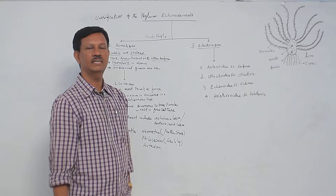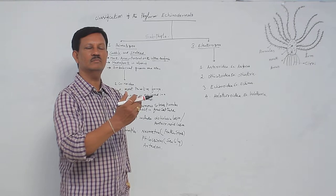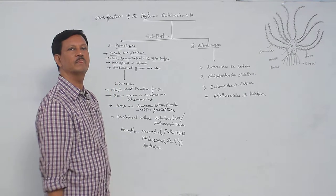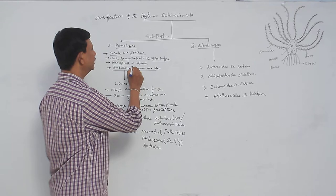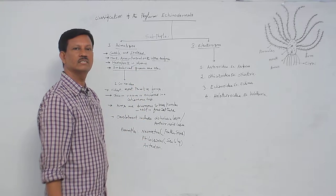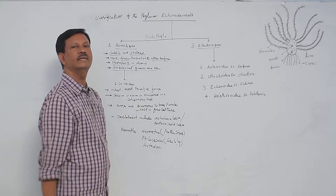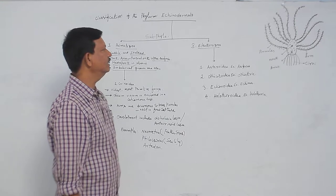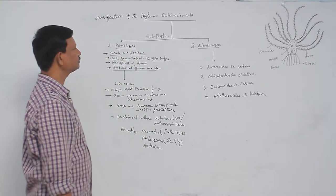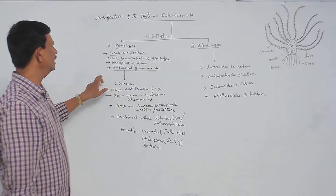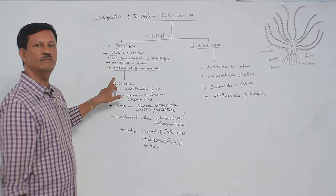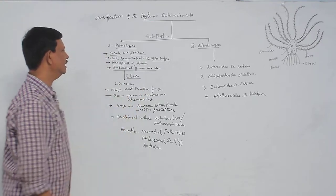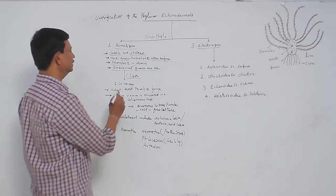The main function of the madriporite is that in the water vascular system, sea water enters the body through it — but it is absent here. Ambulacral grooves, which are also related to the water vascular system, are open in Pelmatozoa. These are the main characters of Pelmatozoa. Pelmatozoa includes only one class, known as Crinoidea.